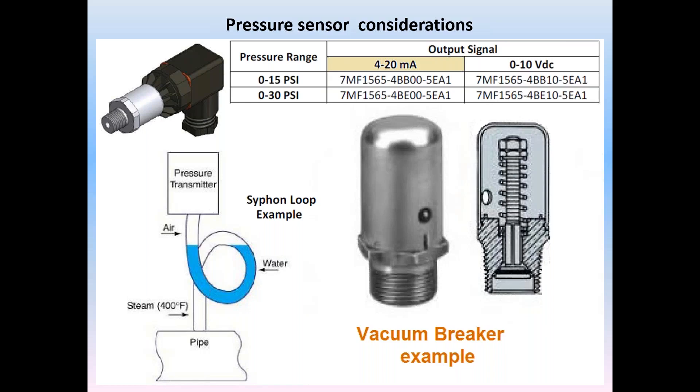If a 4 to 20 pressure sensor is used, and the system cools, oftentimes a vacuum will be created. The pressure sensor will respond with a below 4 milliamp signal. While no permanent damage is caused to the sensor, a lockout will occur until the vacuum is relieved. The use of a vacuum breaker is recommended, or simply use the 0 to 10 volt sensor.